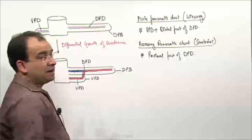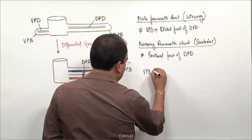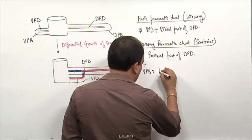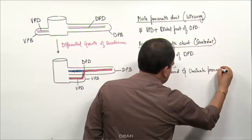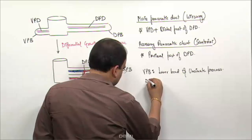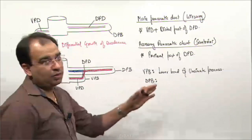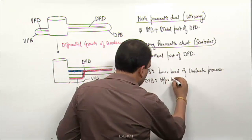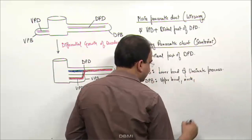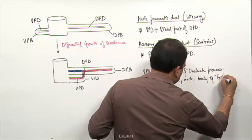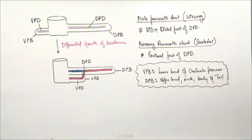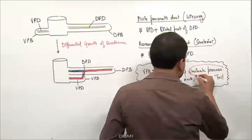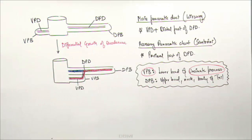Regarding which portions are formed by the ventral and dorsal pancreatic buds: the ventral pancreatic bud forms the lower part of the head and the uncinate process. The dorsal pancreatic bud forms the rest — the upper head, neck, body, and tail of the pancreas. The uncinate process is a commonly tested point — remember it is formed by the ventral pancreatic bud.